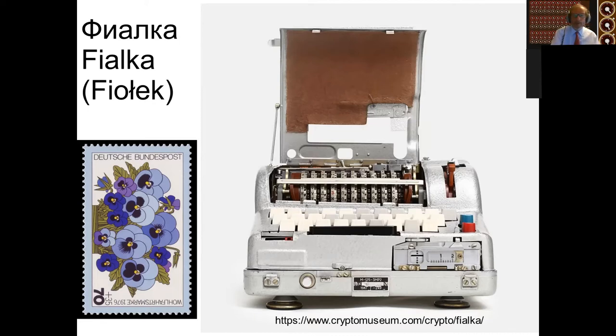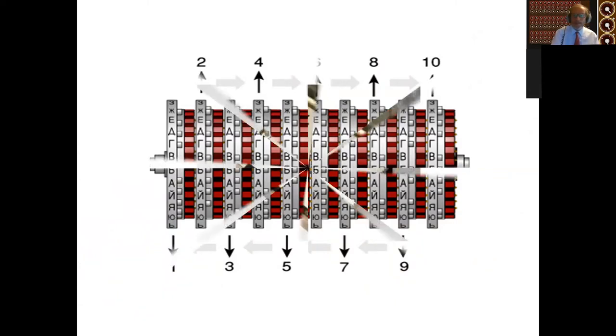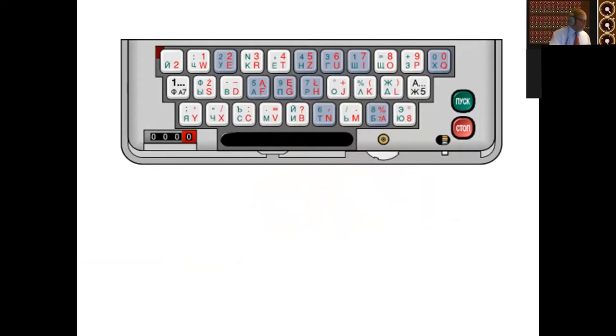Also called in its Polish implementation, a fiołek. It has no fewer than 10 wheels, five of which spin in one direction and five of which spin in the other direction as encryption proceeds. So again, the wheel motion is much more complex than the Enigma. Instead of having a plug board, it has a card. So the card, which is changed daily, replaces the plug board. So you insert the card and then you just slide that card carrier to the right, and then you've effectively got plug board settings set up for the day.